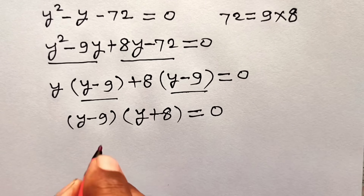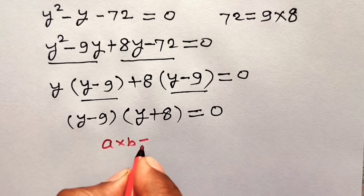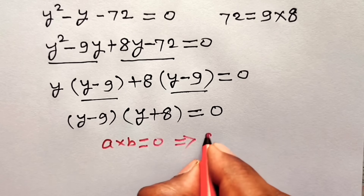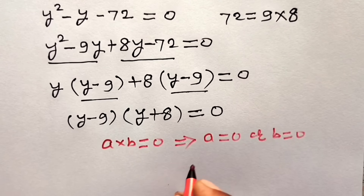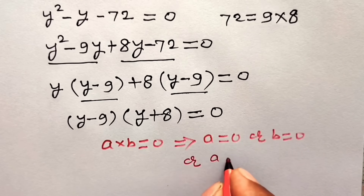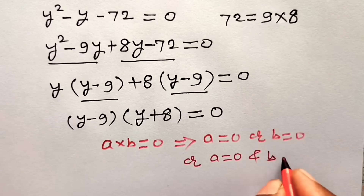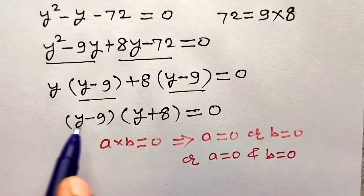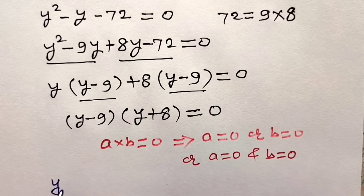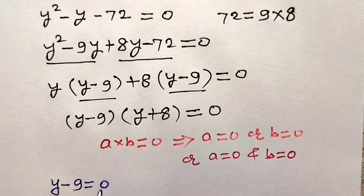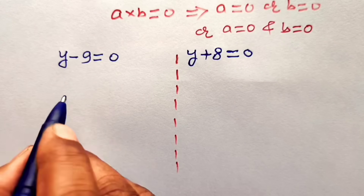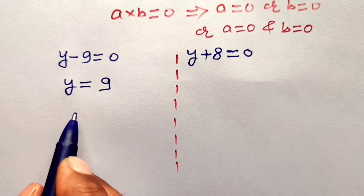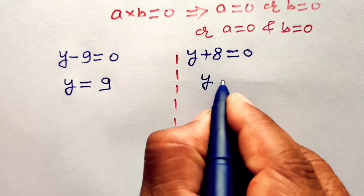Applying the multiplication property — a into b equals 0 implies a equals 0 or b equals 0 or both equal 0 — from here: the first bracket y minus 9 equals 0, giving y equals 9, and the second bracket y plus 8 equals 0, giving y equals minus 8.